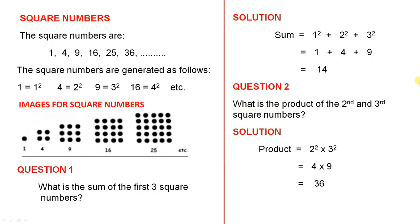Square numbers. The square numbers are 1, 4, 9, 16, 25, 36 and so on.